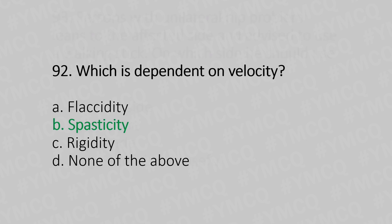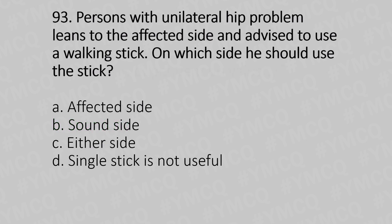Question 93: A person with unilateral hip problem leans to the affected side — on which side should they use a walking stick? Option A: affected side; option B: sound side; option C: either side; option D: a single stick is not useful. The answer is option B: sound side.